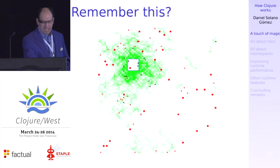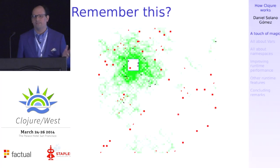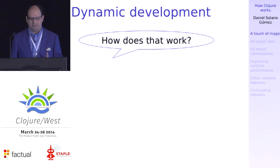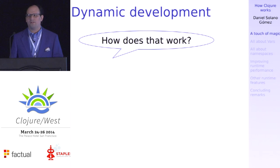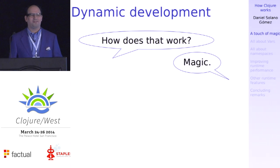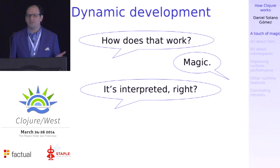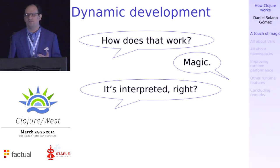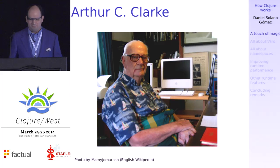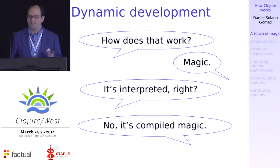So how does Clojure support this? How does it work? Well, it's magic. Actually, that can't be right — it's interpreted? That's your natural inclination. But it's not true. It's compiled magic.